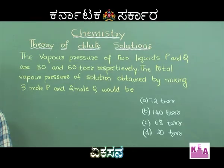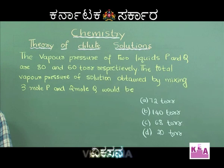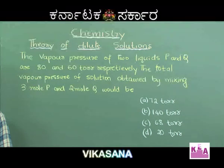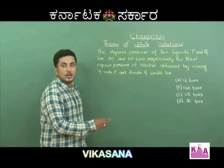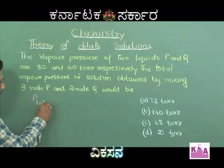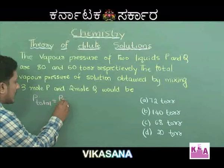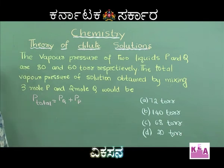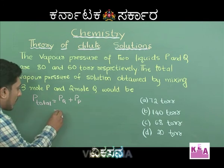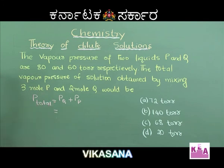The vapour pressure of two liquids P and Q are 80 and 60 torr respectively. The total vapour pressure of the solution obtained by mixing 3 mol of P and 2 mol of Q would be: option A 72 torr, option B 140 torr, option C 68 torr, and option D 20 torr. We need to find the total pressure obtained by mixing 3 mol of P and 2 mol of Q using Raoult's law.